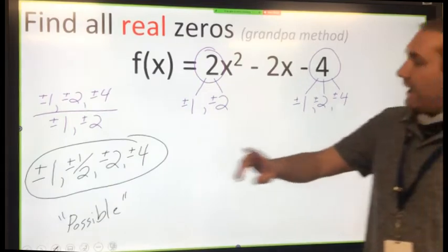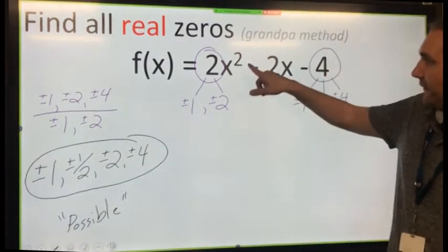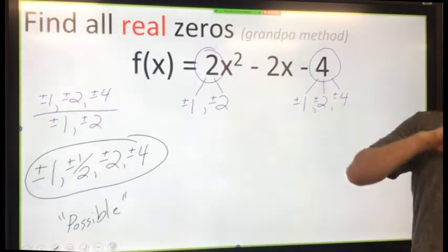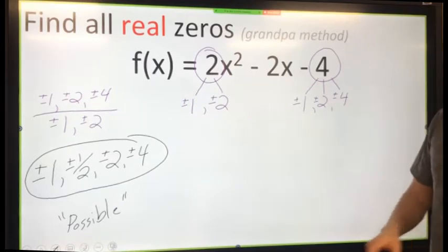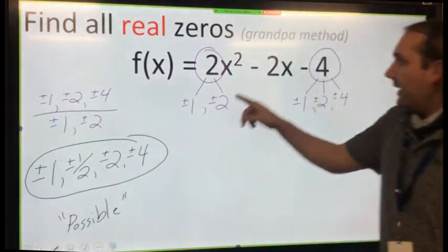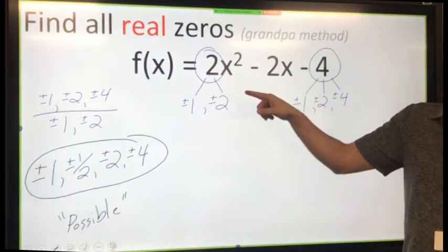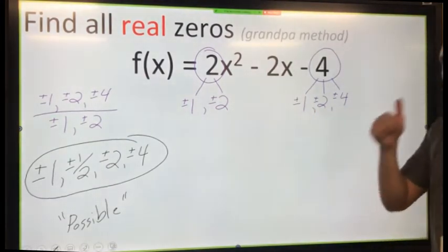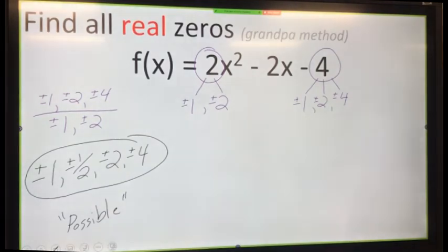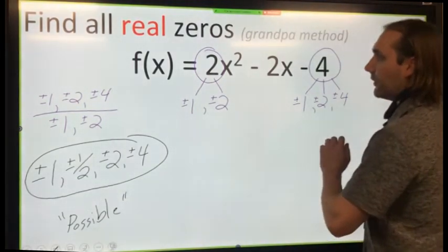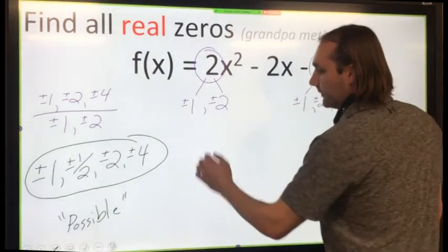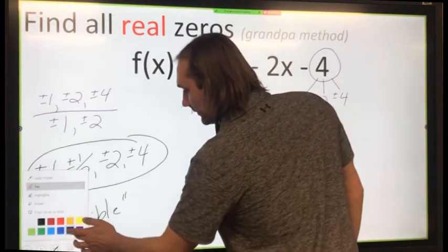Now that we have our 8 possibilities that I need to find 2 of, how your grandpa had to find what those actual zeros are is to take each one of these and divide them into this polynomial. Once you divide it and get a remainder of 0, that tells you yes, you are a zero. Otherwise, if you get any other number, it's not a zero. You have to throw it away.